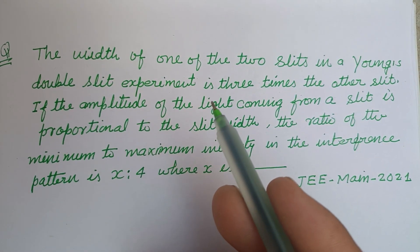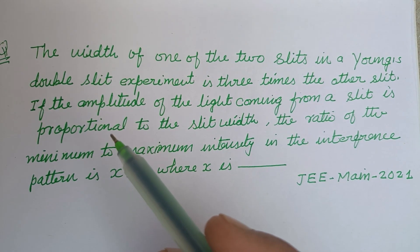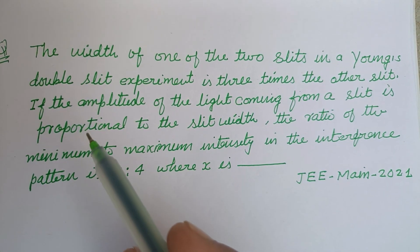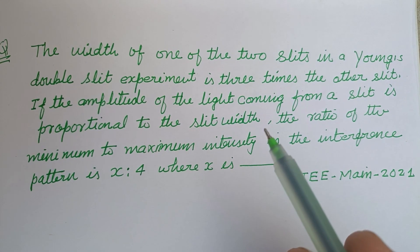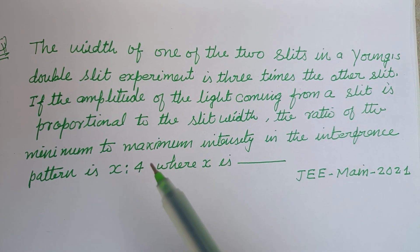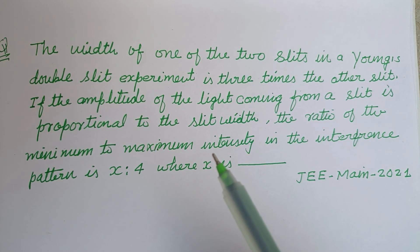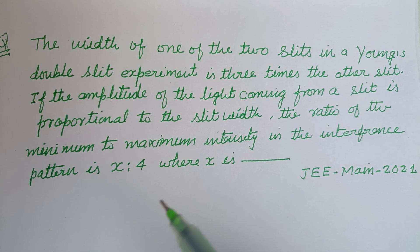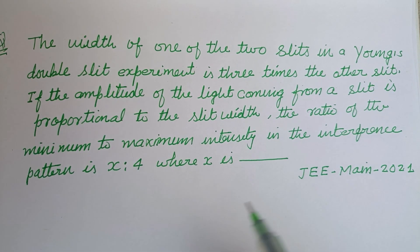The width of one of the two slits in Young's double slit experiment is three times the other slit. If the amplitude of the light coming from a slit is proportional to the slit width, the ratio of the minimum to maximum intensity in the interference pattern is X ratio 4, where X is.